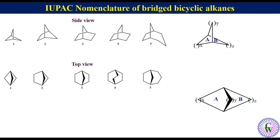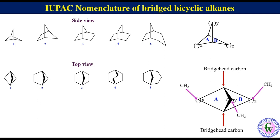These two carbons are called bridgehead carbons. These vertices represent CH₂. X, Y, and Z are the number of CH₂ groups. These also represent the number of carbons in the bridge chain, also called bridge length.